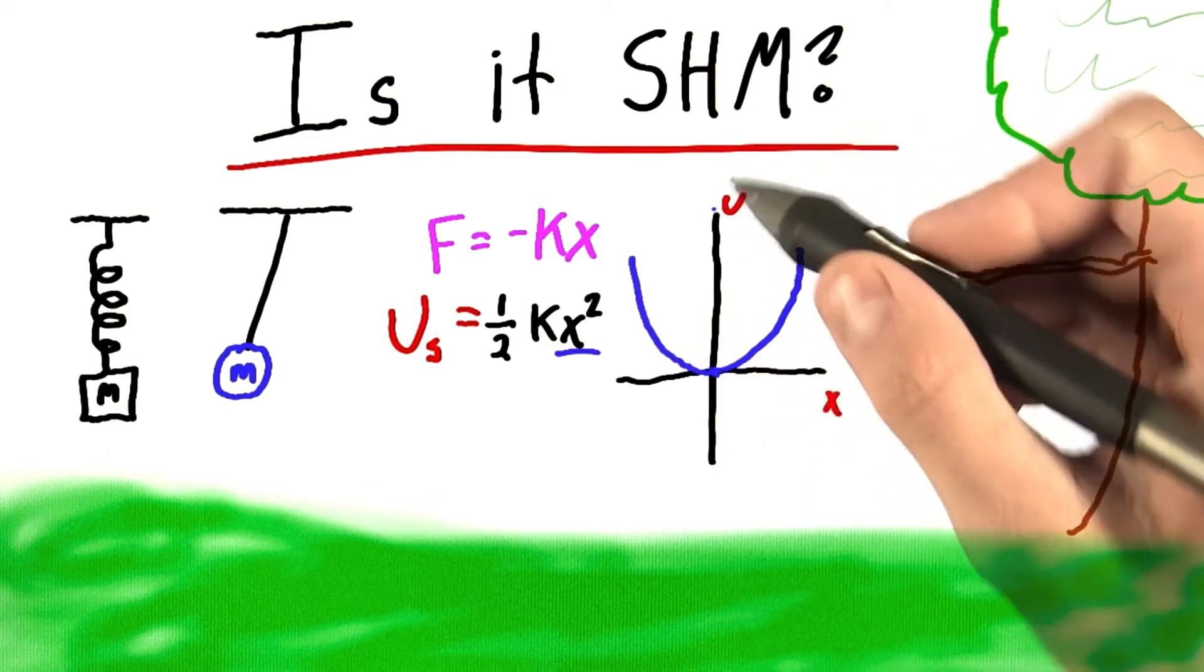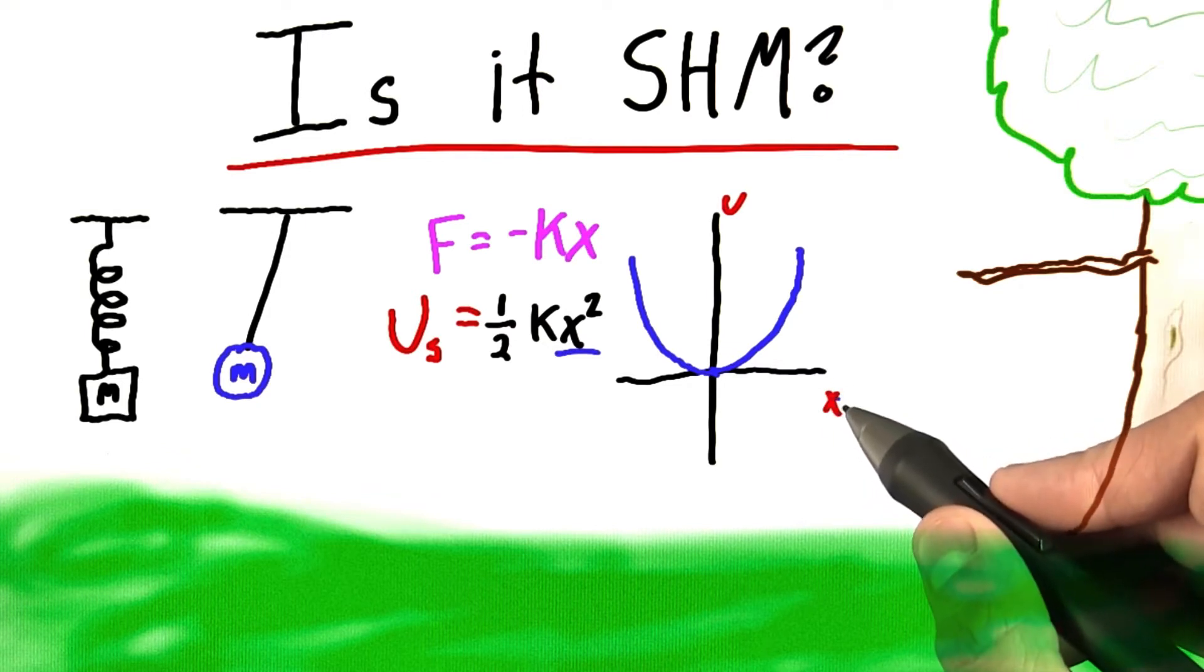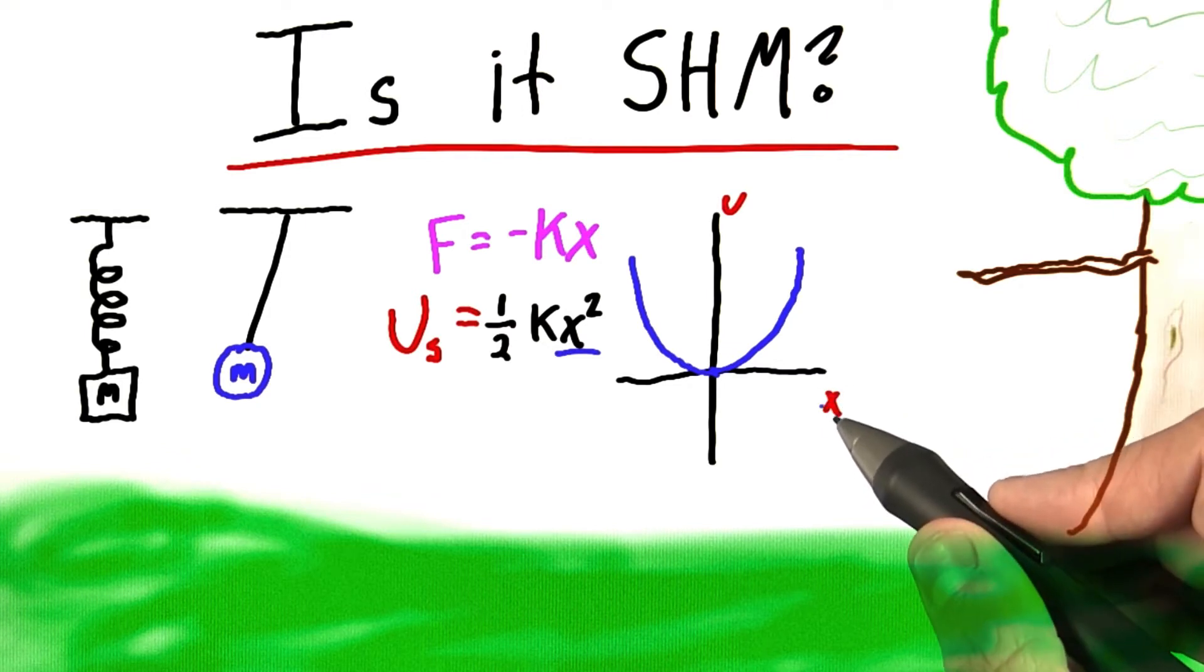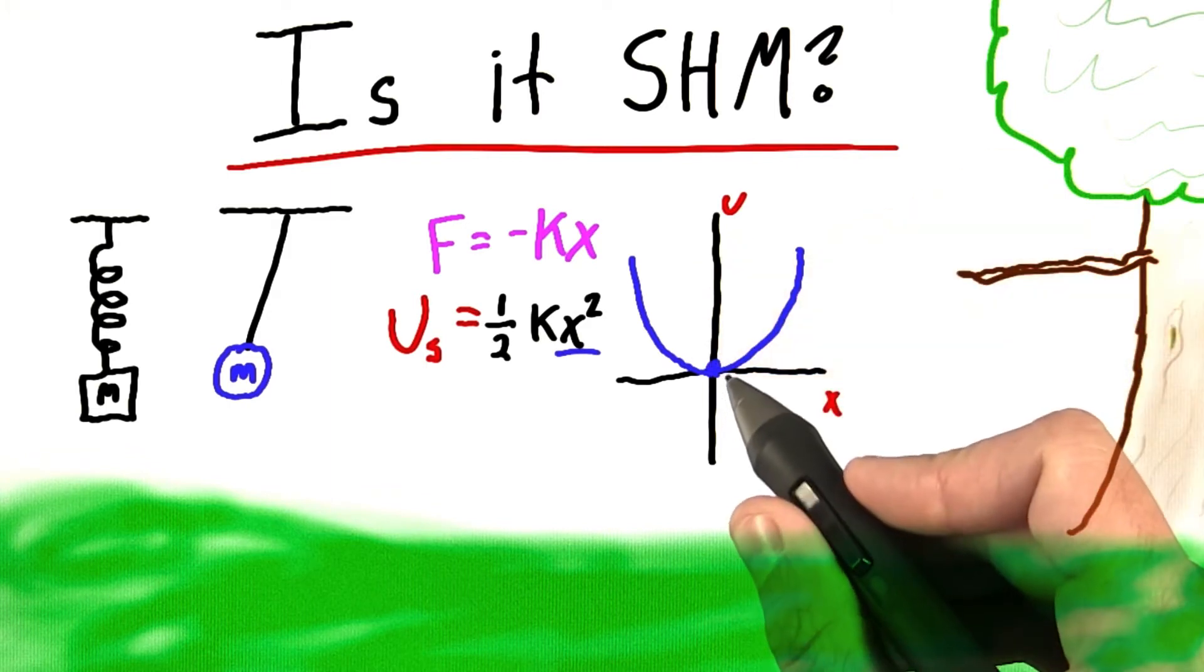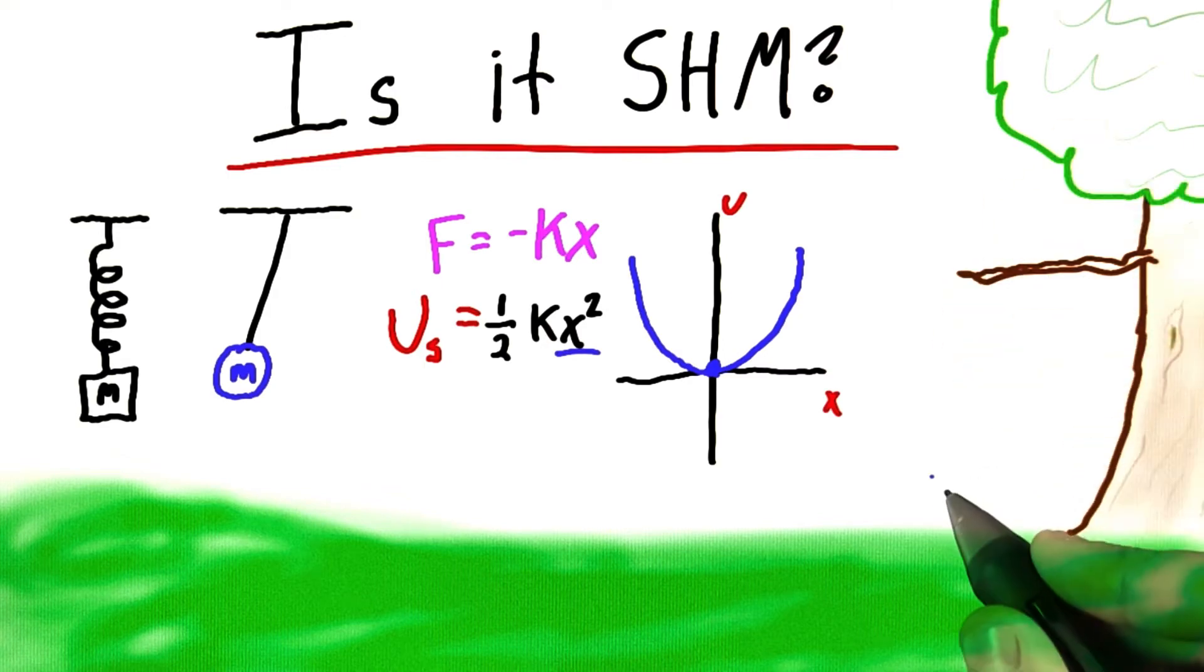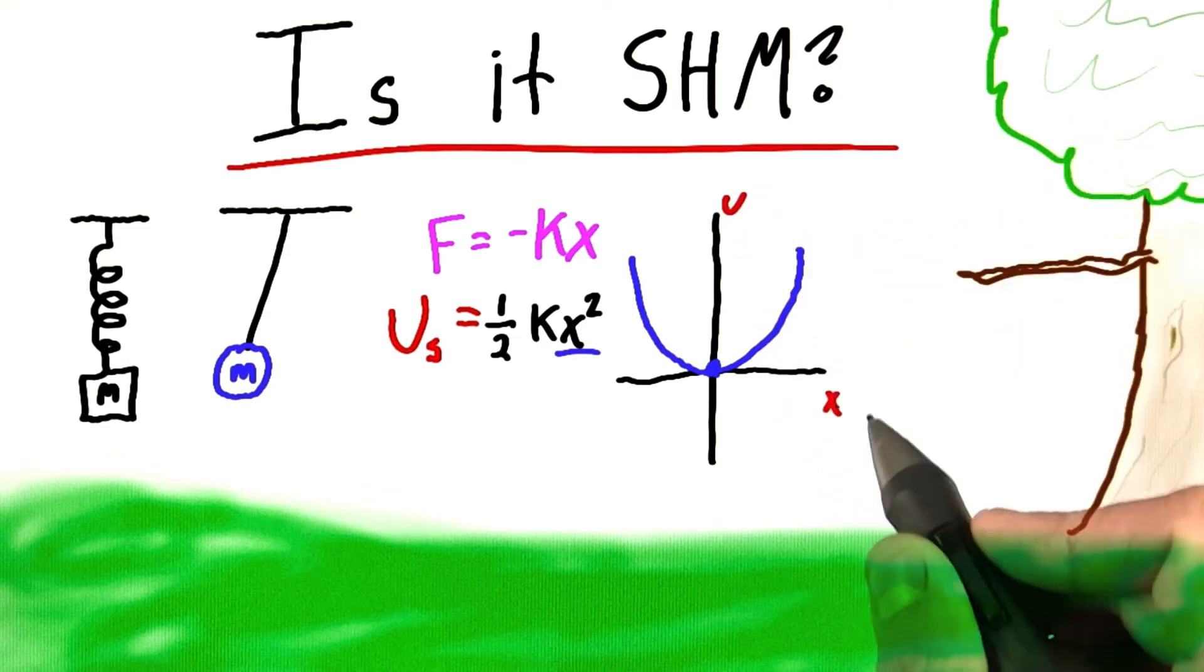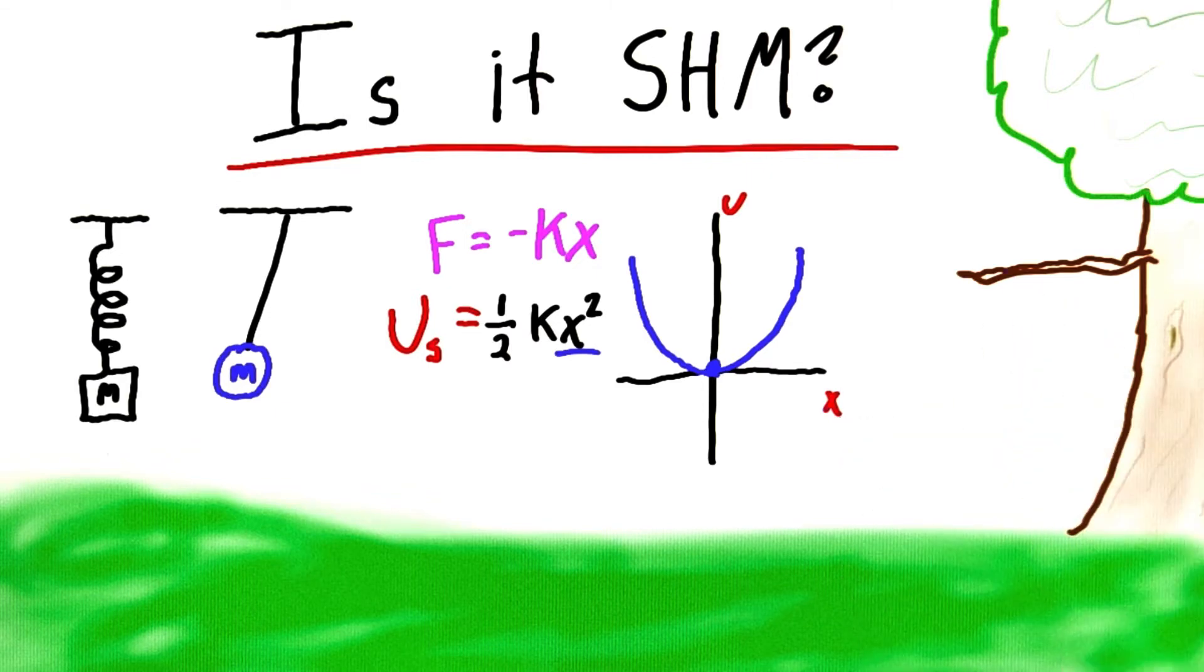Anything that has a parabolic potential energy curve when plotted against some sort of displacement will exhibit simple harmonic motion when it's displaced away from this equilibrium point. So if we can somehow show that a branch fluttering back and forth somehow exhibits this potential energy curve, we're done, and we've proven that it must be simple harmonic motion.